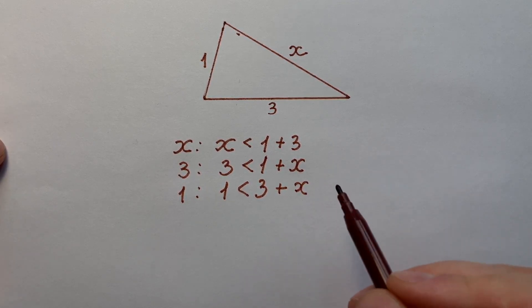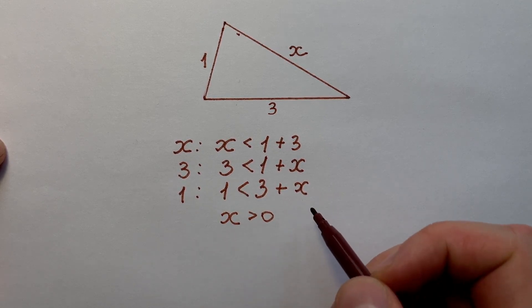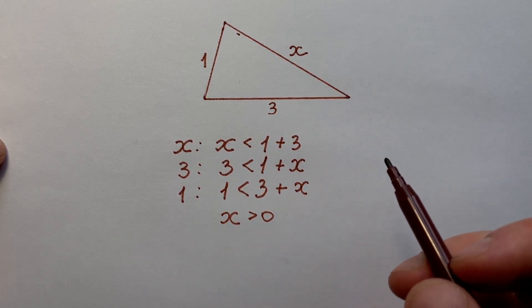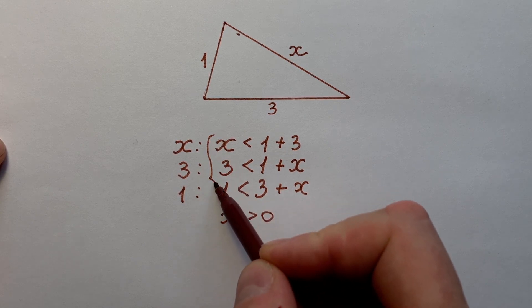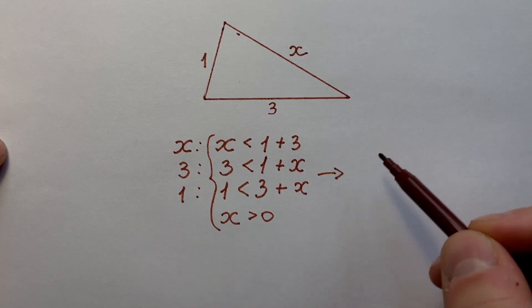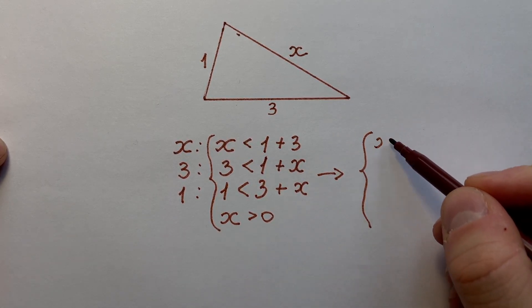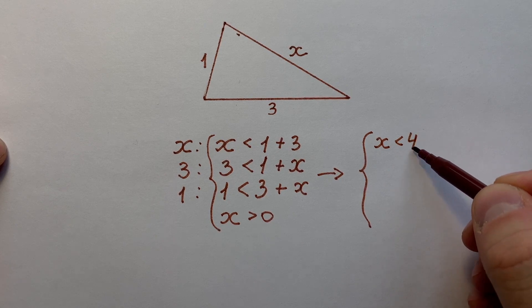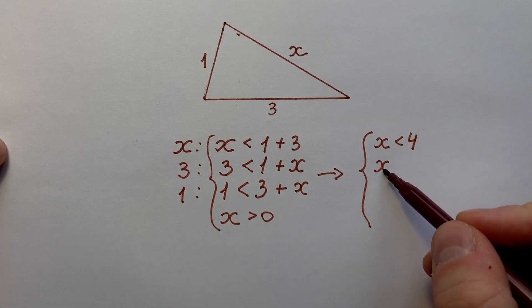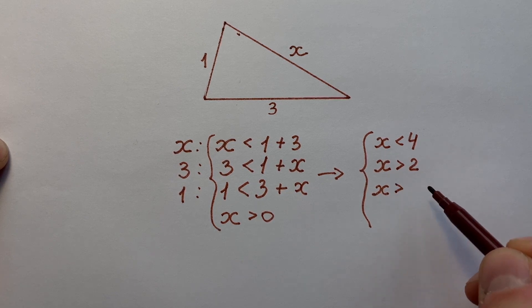And we also know that x is bigger than zero, of course, because it's a length of a side. Here we have a system of four inequalities and their solutions are very simple. The first inequality x is less than 4, second inequality has a solution x is bigger than 2, third gives us x is bigger than minus 2.